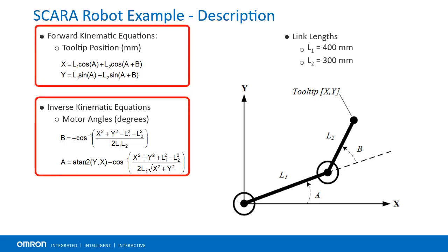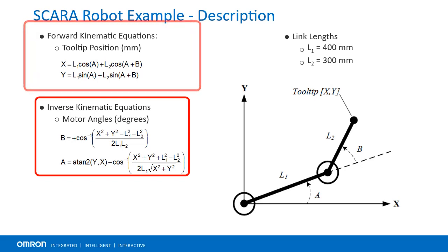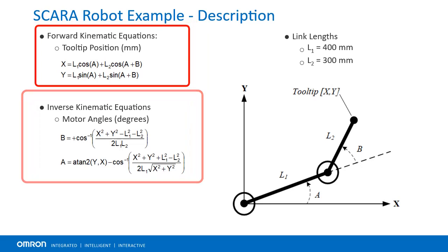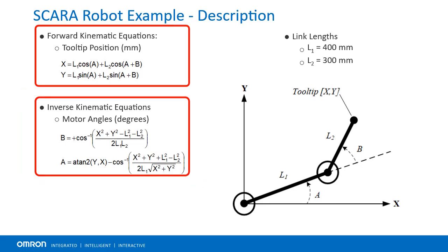Tooltip or axis positions X and Y are defined in millimeters by the forward kinematic equations. Motor angles A and B are defined in degrees by the inverse kinematic equations. Both are shown on screen.